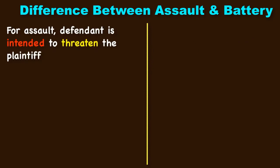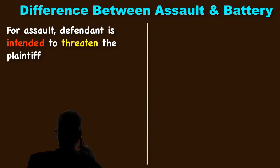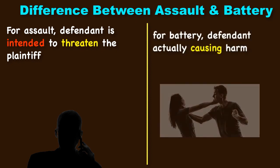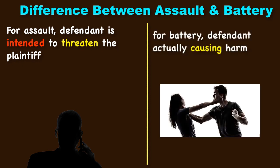For assault, the defendant intends to threaten the plaintiff — the person has the intention to threaten you, not to beat or hit you. Whereas for battery, the defendant is actually causing harm — substantially causing harm. That is the major difference between battery and assault.